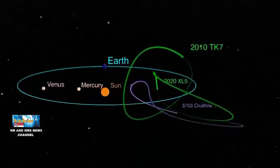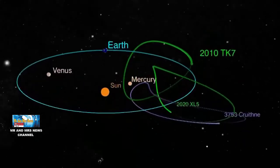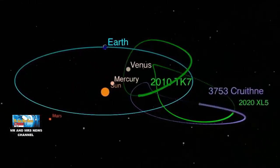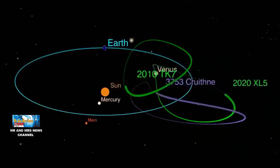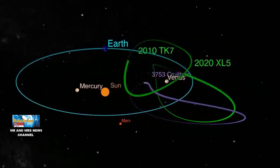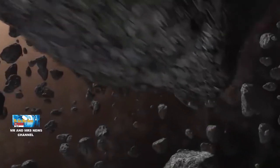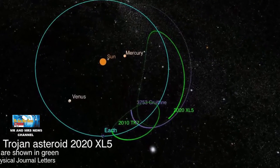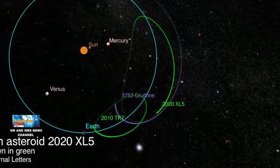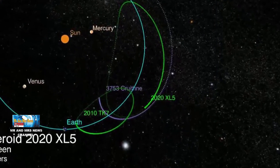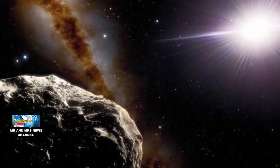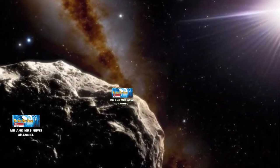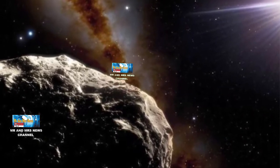Seperti Trojan pertama, para astronom memperkirakan bahwa 2020 XL5 akan bertahan setidaknya selama 4000 tahun sebelum meluncur ke bagian lain. Penemuan asteroid Trojan bumi kedua ini dapat meningkatkan pengetahuan kita tentang dinamika populasi yang sulit dipahami. Dengan membandingkan sifat orbit dari dua Trojan bumi yang diketahui sejauh ini, kita dapat lebih memahami mekanisme yang memungkinkan stabilitas sementaranya. Adapun penelitian yang dilakukan telah dipublikasikan di Nature Communications.